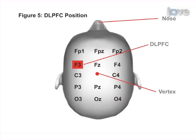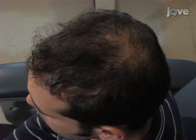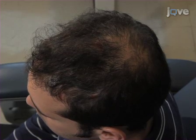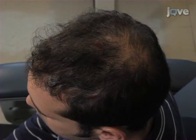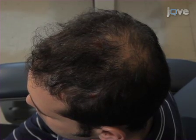This method of determining the stimulation site is sufficient when using traditional tDCS electrodes. For more focal tDCS, other methods of cortical localization may be needed, such as neuronavigation.